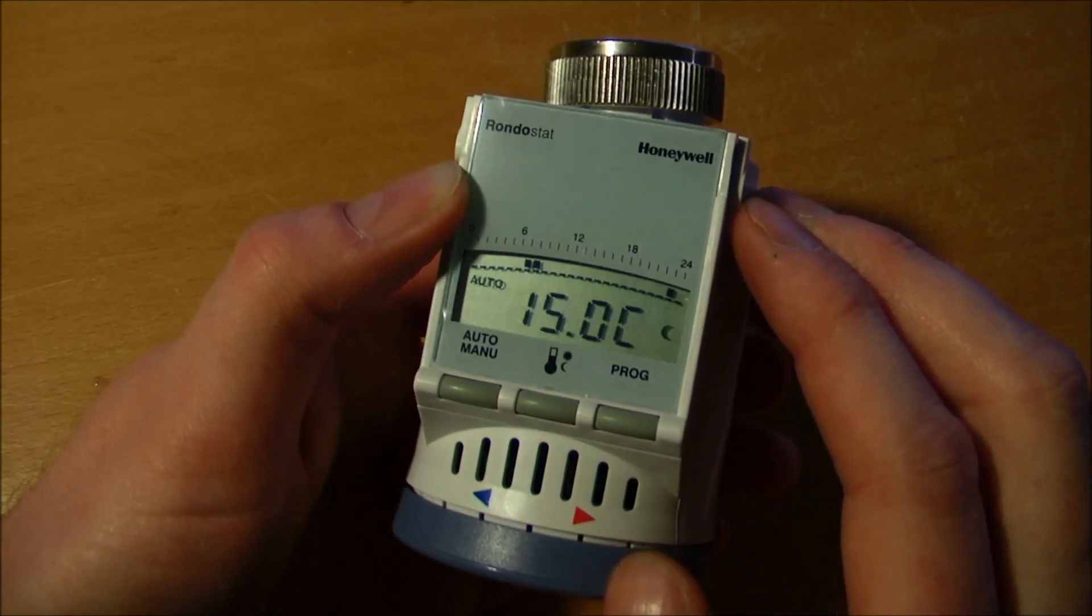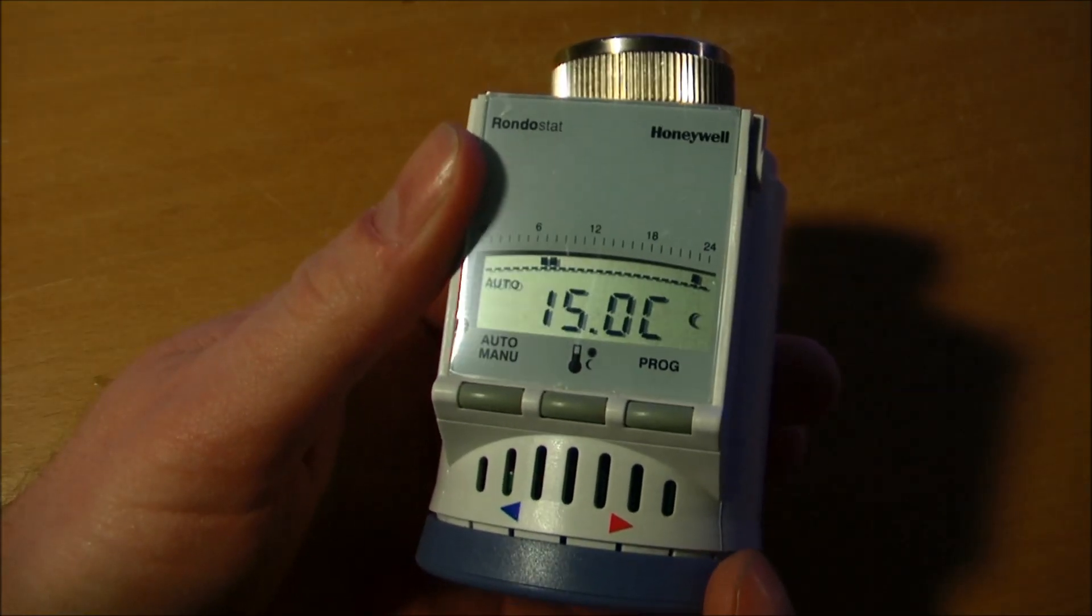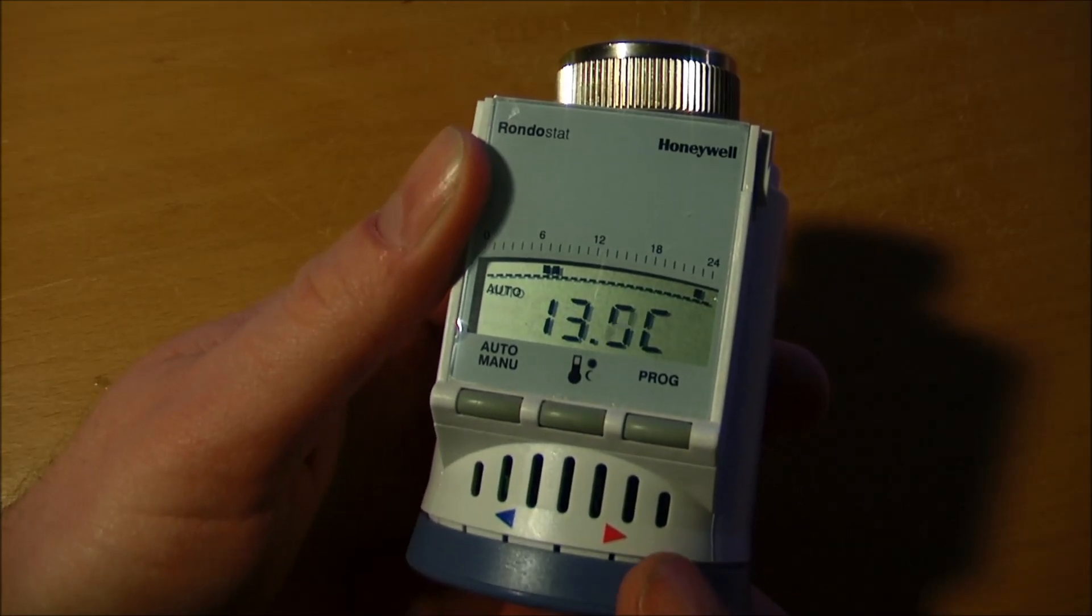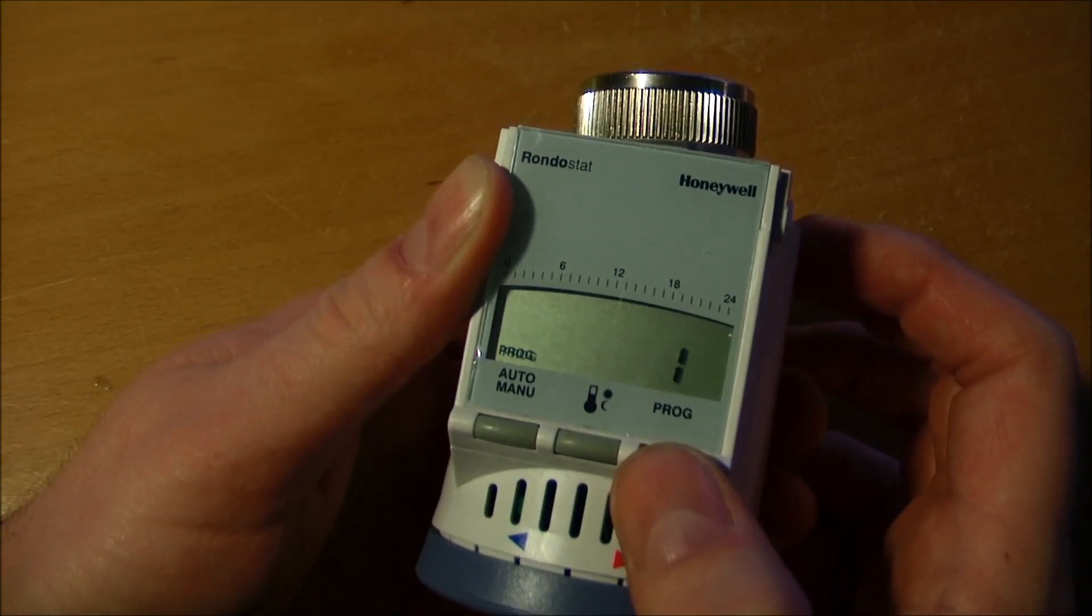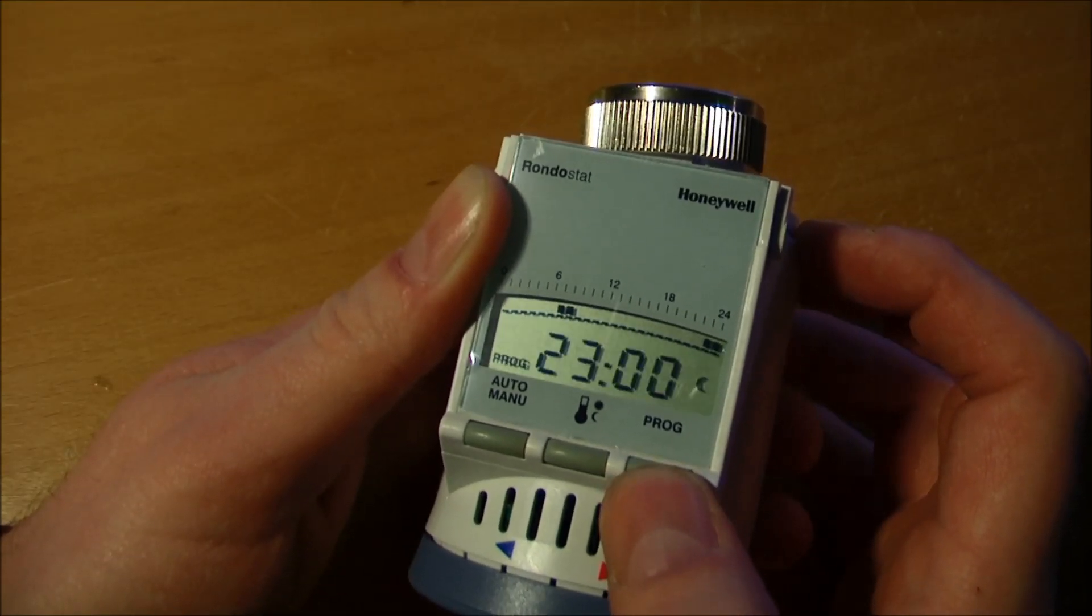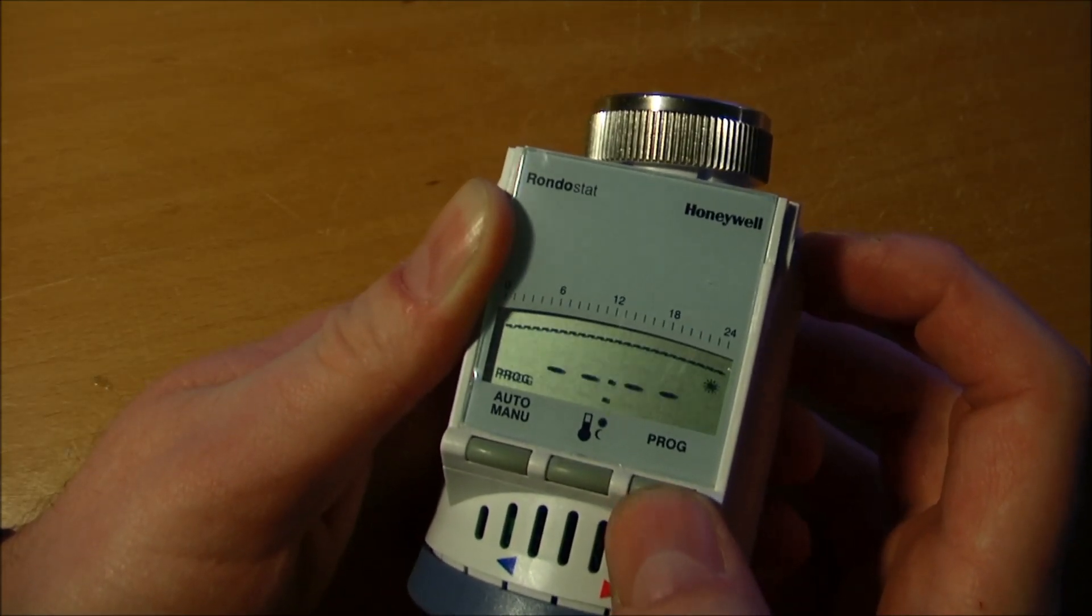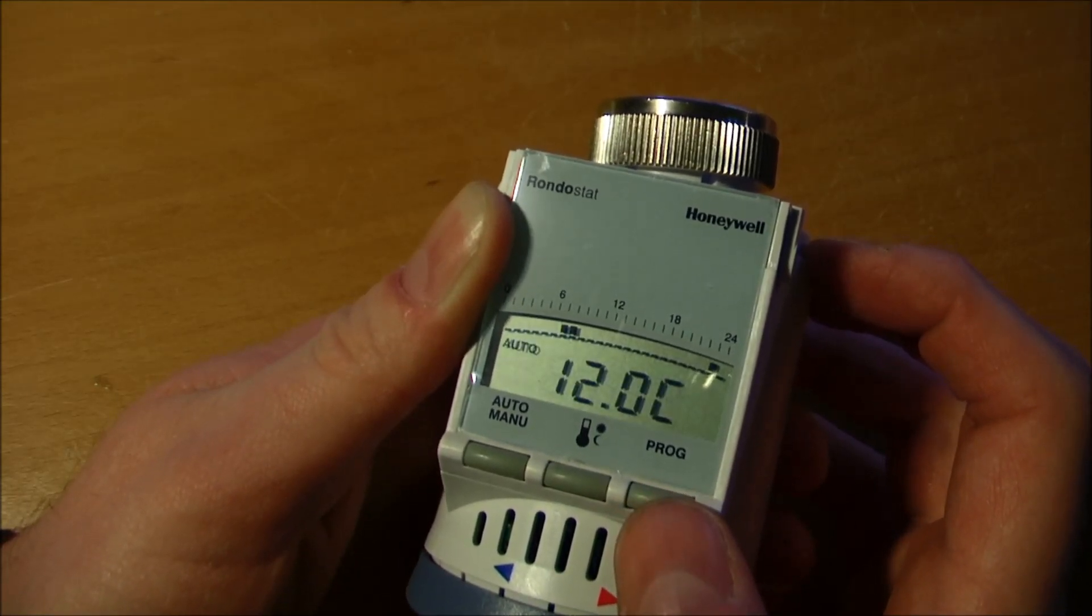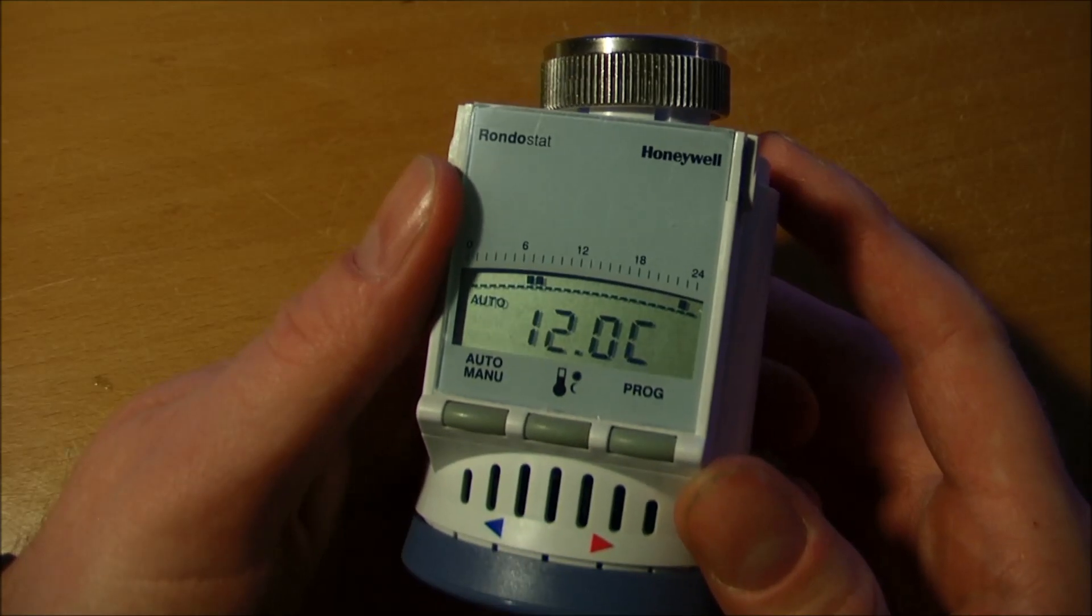And here you can set the temperatures. I found out that 15 degrees is actually, I don't need that high, so I could set it to 12 degrees. Let's do that. 12. Check. And then, do we really have to go through all this? Let's do that very quick. 12 degrees. And that's like the program for this one, and it's because it's the bedroom. I don't need much heat in the bedroom.